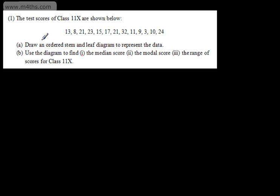In question 1, it says the test scores of class 11X are shown below. So we've got 13, 8, 21, 23, 15, 17, 21, 32, 11, 9, 3, 10, and 24. In part A, we're asked to draw an ordered stem and leaf diagram to represent the data.